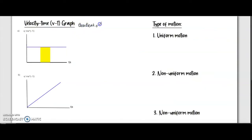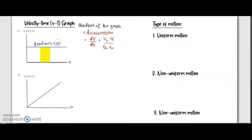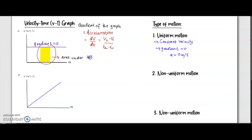Next we move to the velocity-time graph. The gradient of the graph refers to the acceleration of the object, that is dv over dt — the first derivative of velocity in terms of time. The first graph has a zero gradient, which means it has zero acceleration but constant velocity. The area under the graph refers to displacement.